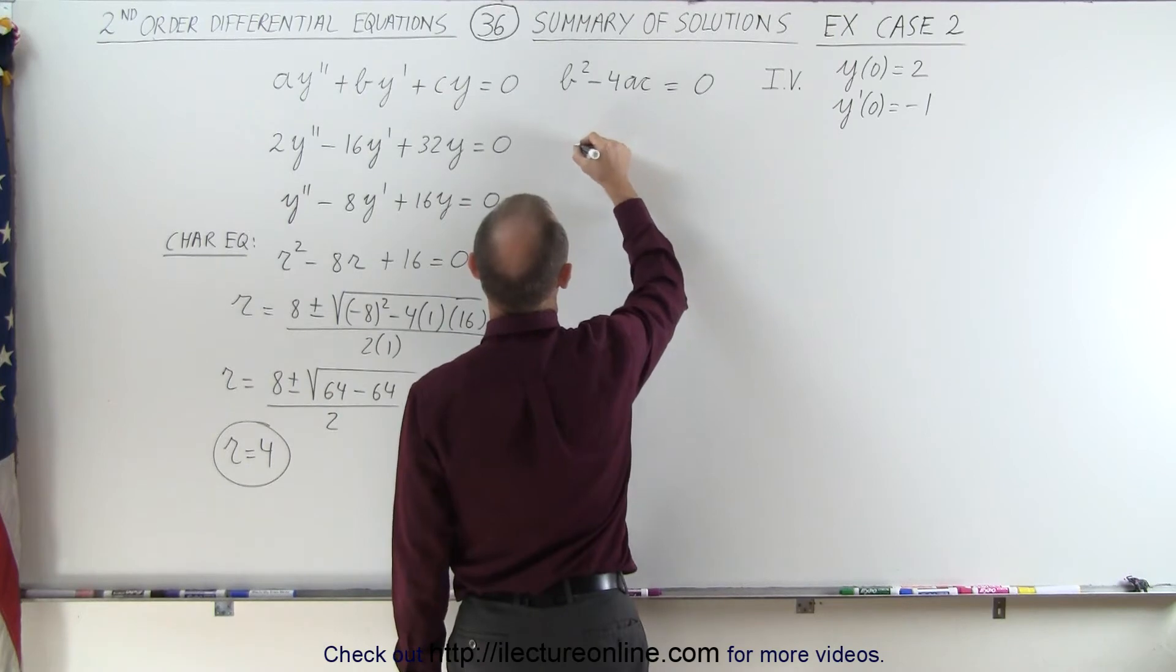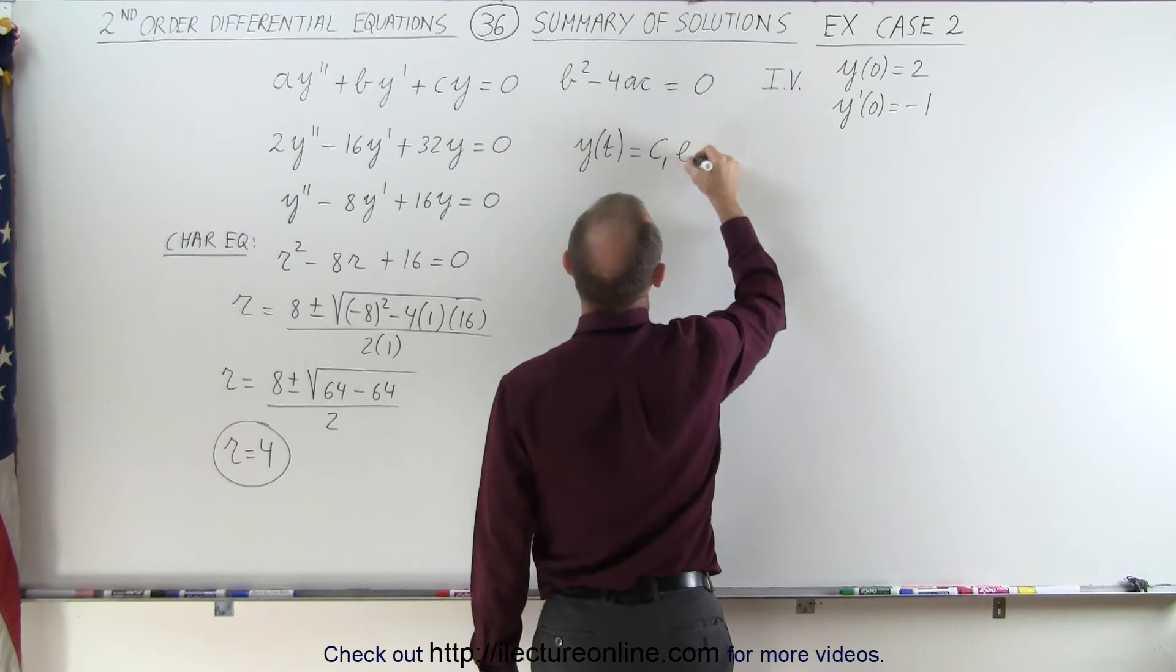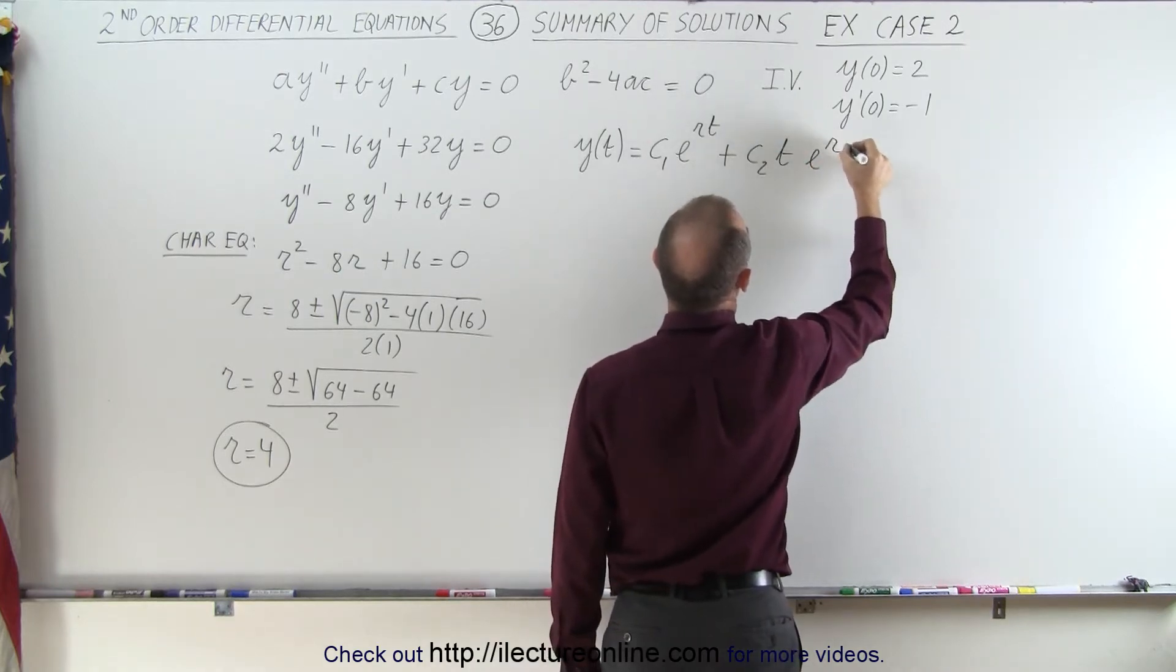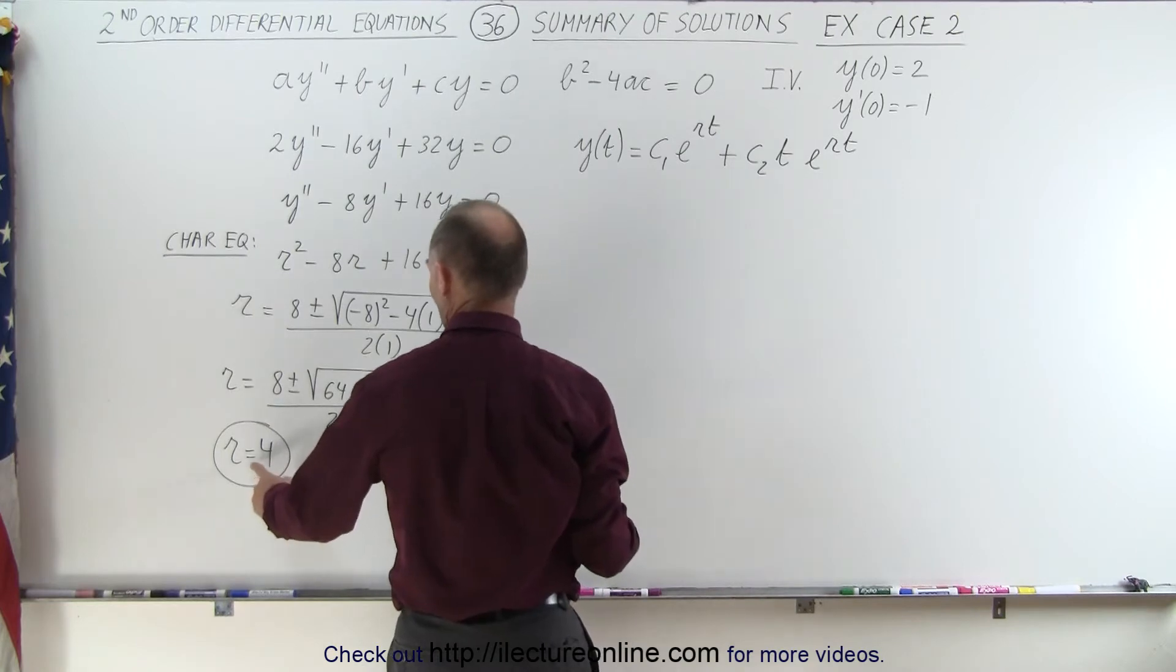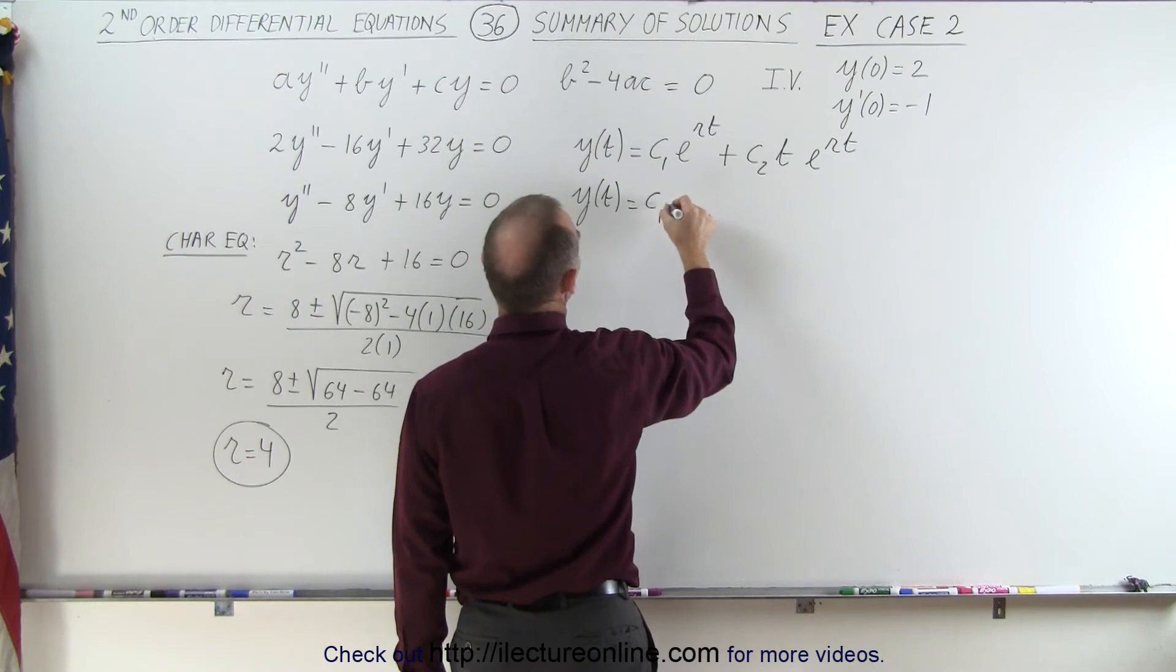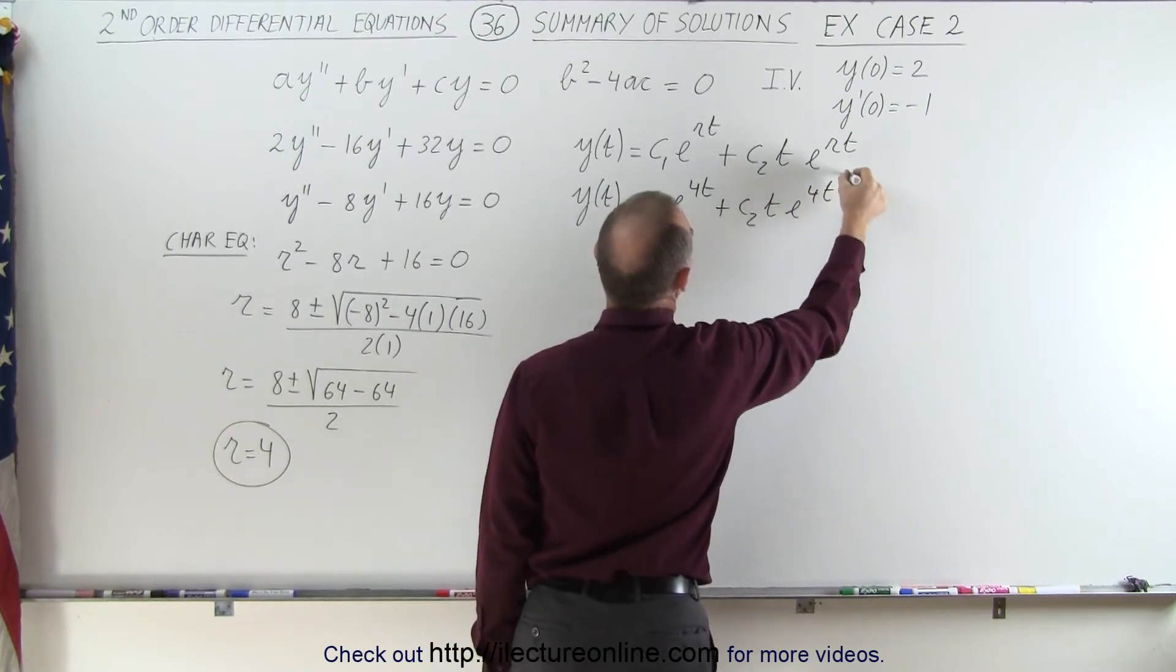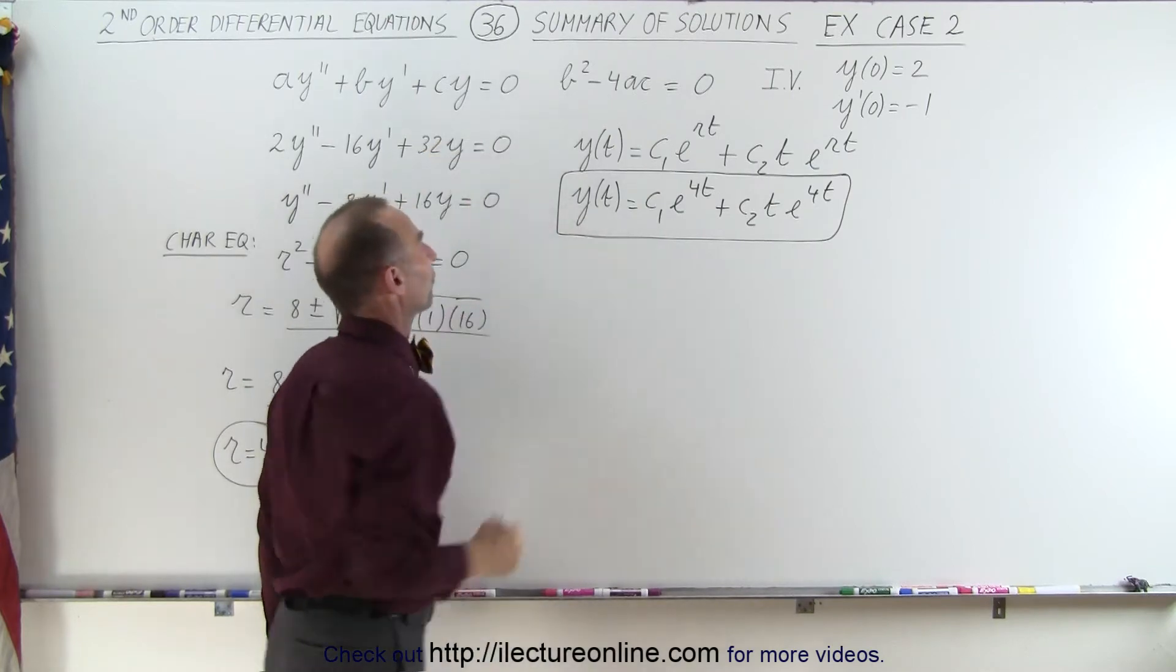We can say that y is a function of t is equal to c1 e to the root times t plus c2 times t times e to the root times t. And plugging in what we know, we know that r is 4, so this becomes y is a function of time is equal to c1 e to the 4t plus c2 times t times e to the 4t. This is then the general solution to this original differential equation.